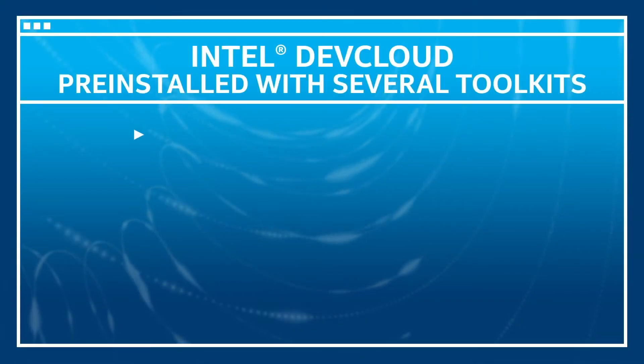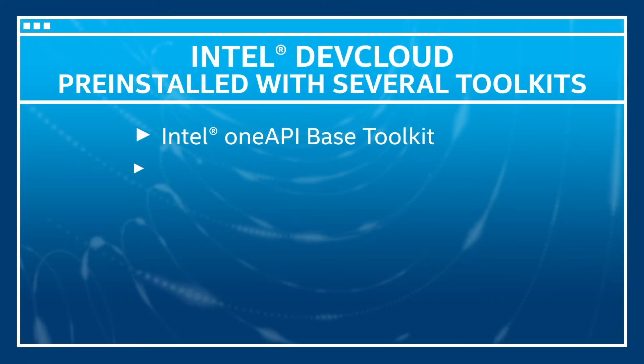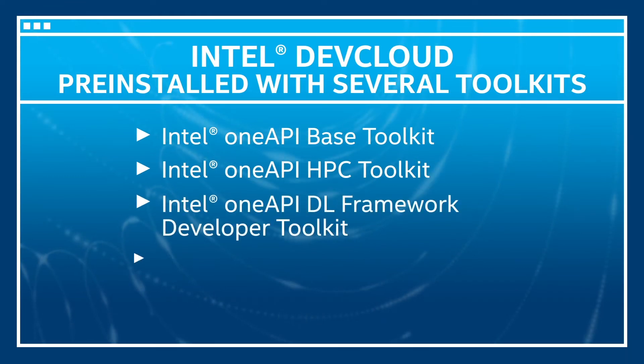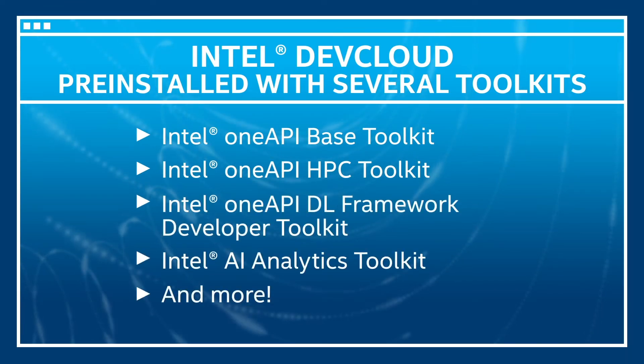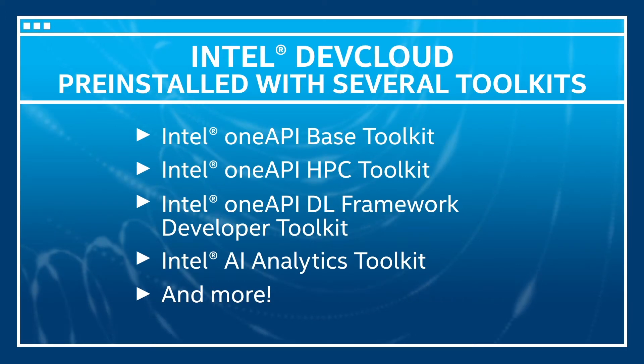The Intel Dev Cloud makes it possible for you to get started quickly by offering ways for you to test programming tools before applying them to your own code. The Intel Dev Cloud is a cluster composed of CPUs, GPUs, and FPGAs and has several toolkits pre-installed. The Intel Dev Cloud will be kept up to date with the latest hardware and software from Intel, and this allows you to evaluate them soon after release.